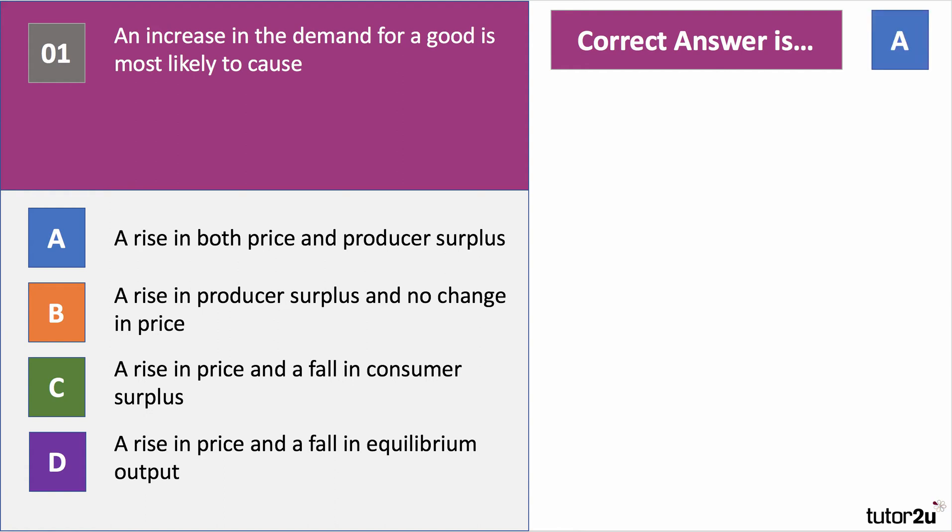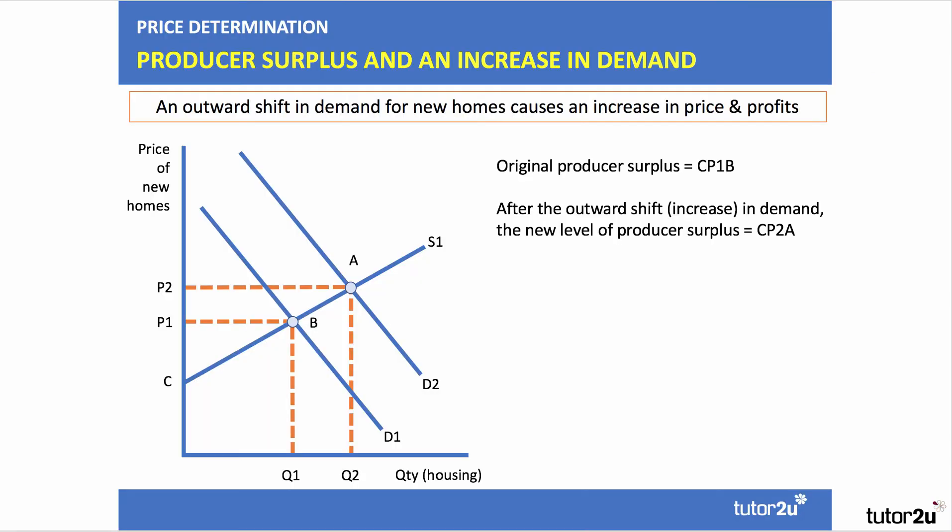The answer to question one is A — a rise in both price and producer surplus. It just goes back to the diagram we showed a few minutes ago. Let's take the demand for new housing: if there's an increase in demand for new homes, house prices will go up and the quantity of homes bought and sold will rise. The original producer surplus is area C, P1, B — above the supply curve below the price. After the increased demand, the area of producer surplus is area C, P2, A — a bigger area of producer surplus. Higher demand is good news for the profits of home builders.